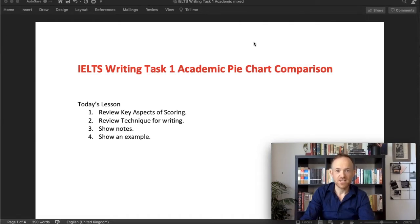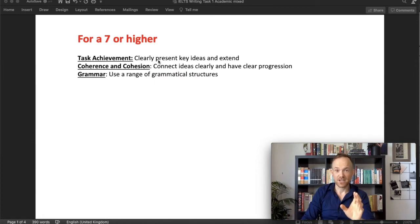All right. So let's begin. Just to go over what we're going to do today, first, we're going to review the key aspects of scoring. That's the things that you want to do if you're aiming for that 6.5, 7, or even higher. I'll very quickly review the technique that I use with my students when practicing this. I will then show you the notes that I would prepare, and then an example of how I would address this writing task. These are taken directly from the IELTS band descriptors.